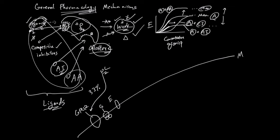When a ligand binds to the G-protein-coupled receptor, the G-protein gets activated, and the activated G-protein can then go and activate the effector. The effector does the final work. So it's a little cascade: G-protein-coupled receptor → G-protein → effector → final work.